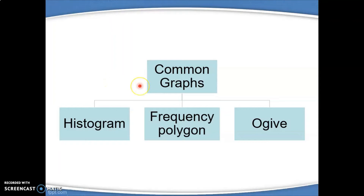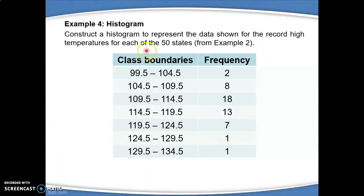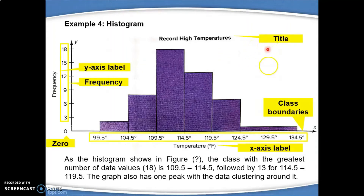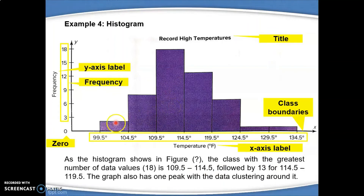I will now discuss several common graphs used to represent quantitative data, such as histogram, frequency polygon, and ogive. To construct a histogram, we need the class boundaries and frequency. In this example, I took class boundaries and frequency from example 2. Don't forget the important elements such as the title, the class boundaries on the X axis, the frequency on the Y axis, both with labels, and 0. We interpret the histogram by focusing on the highest bar or by describing how the data is distributed.